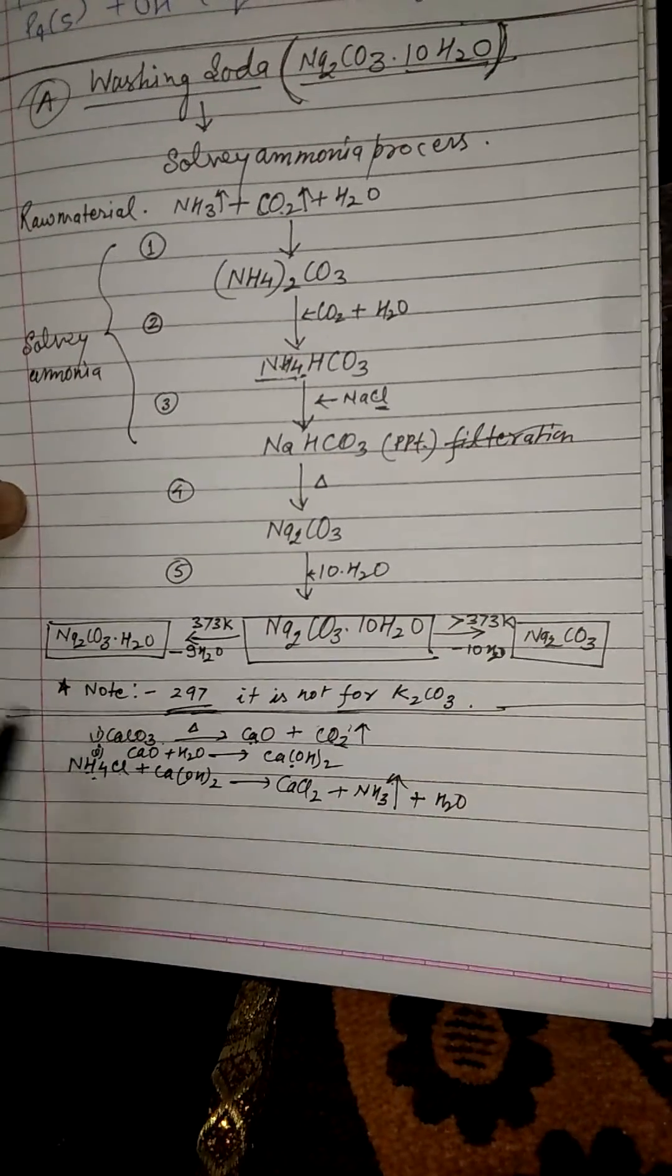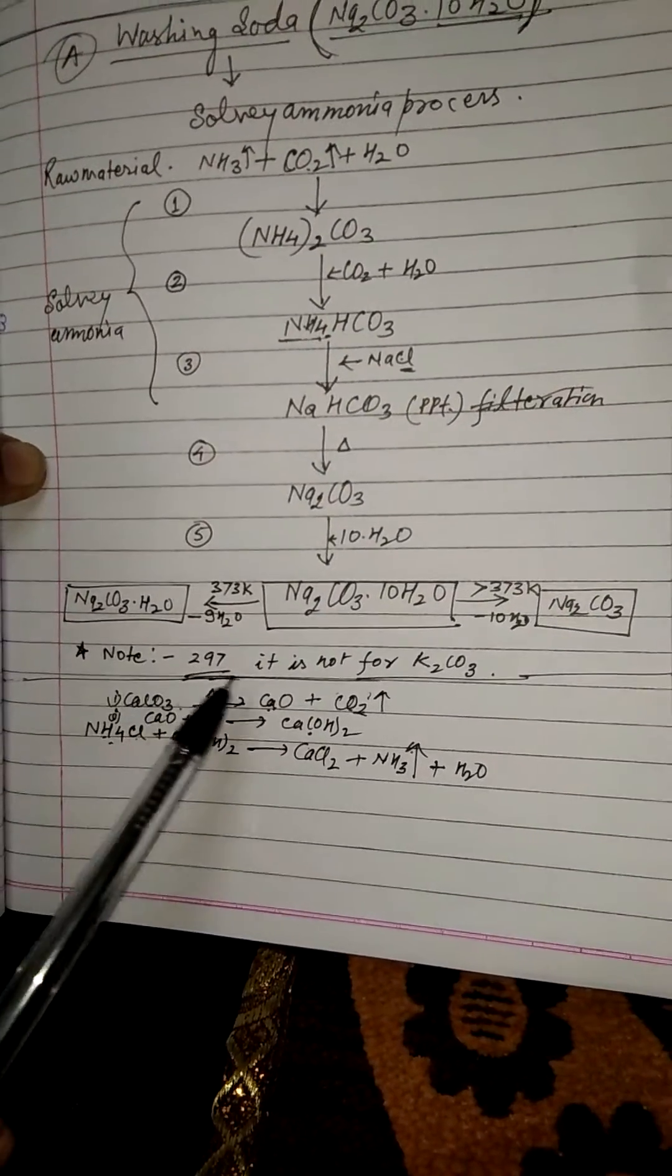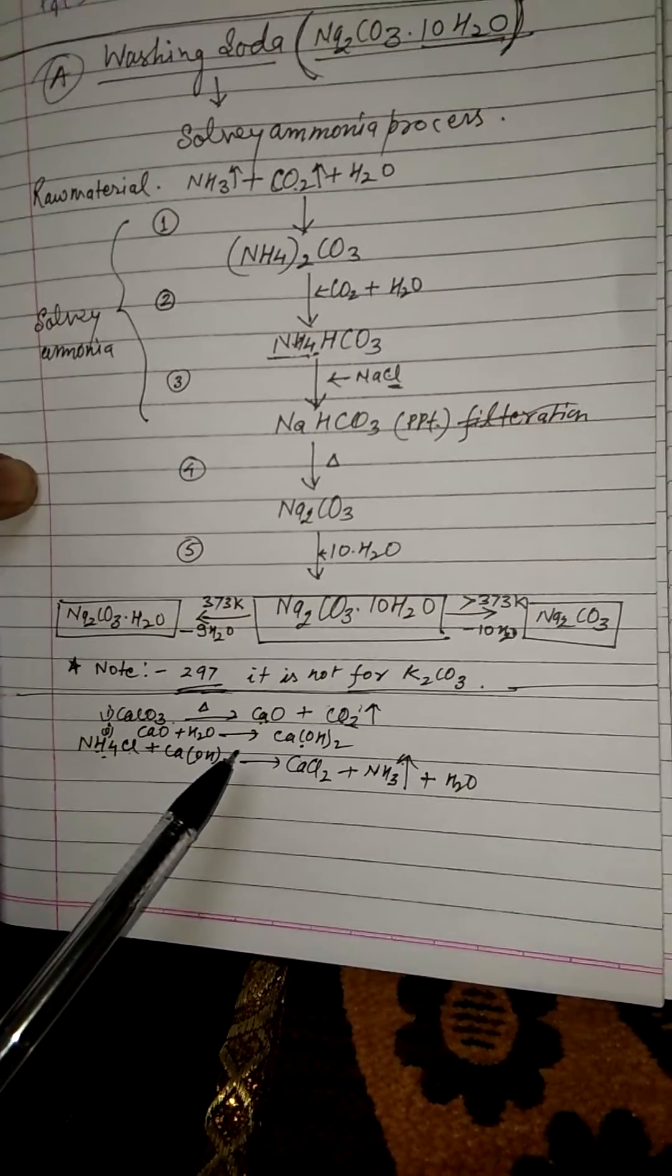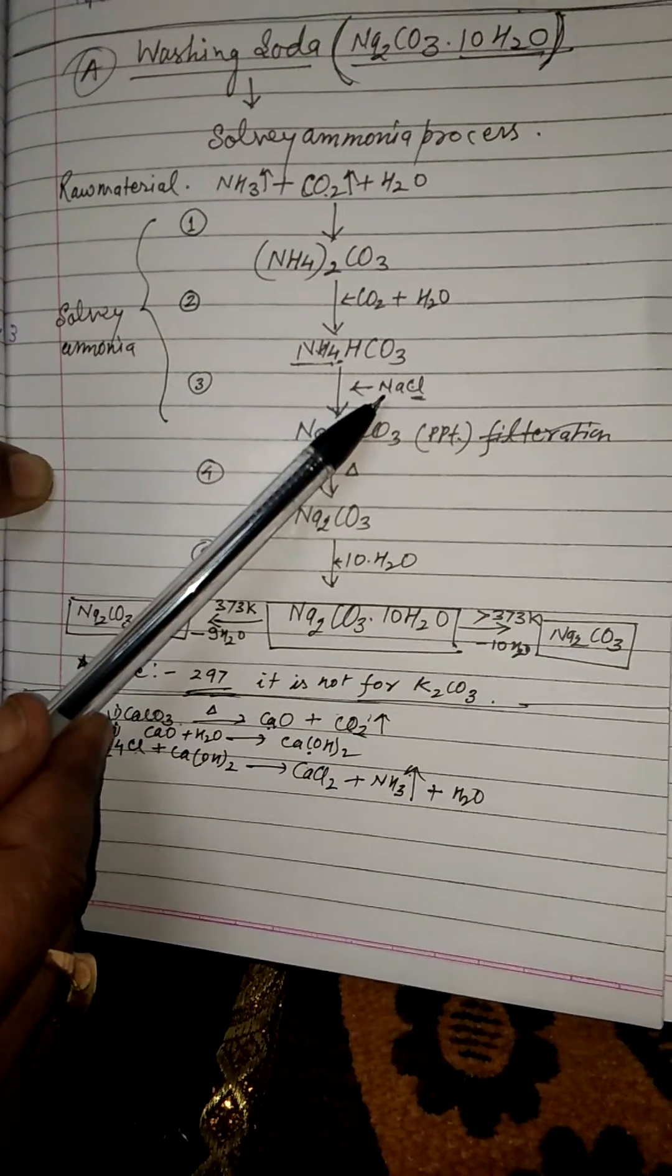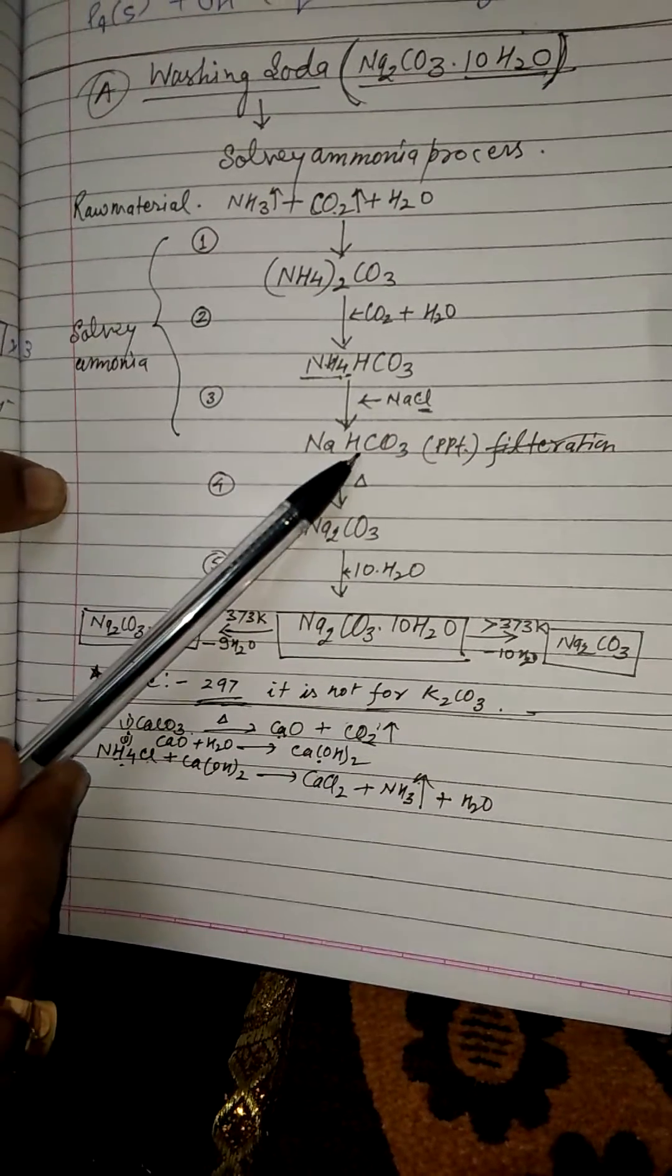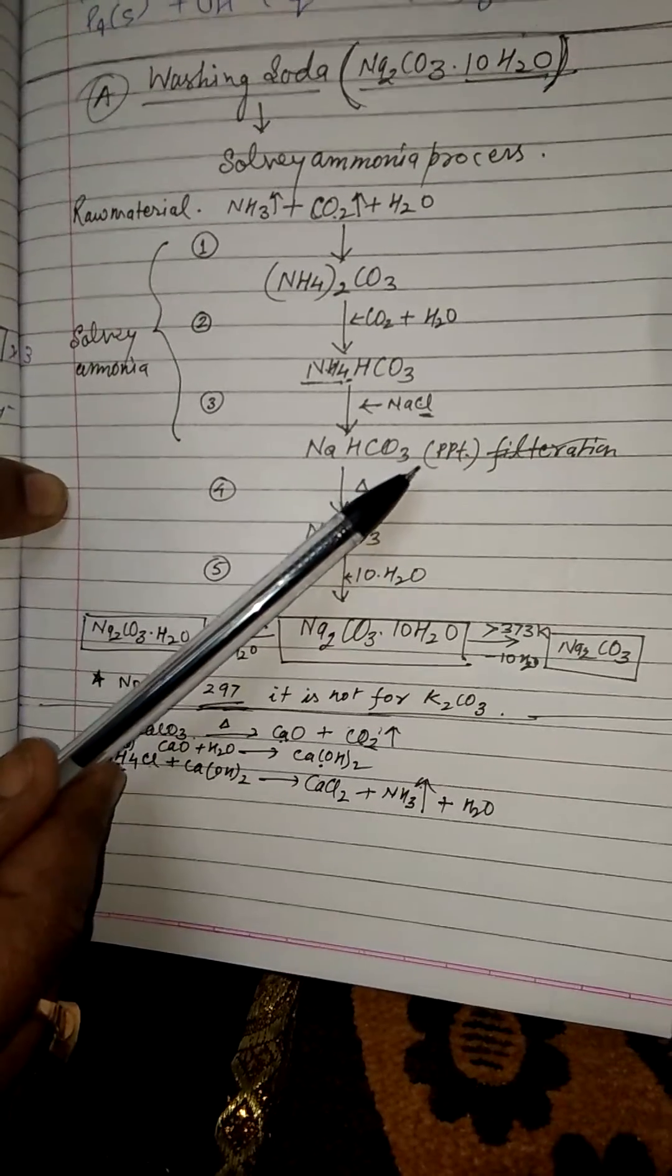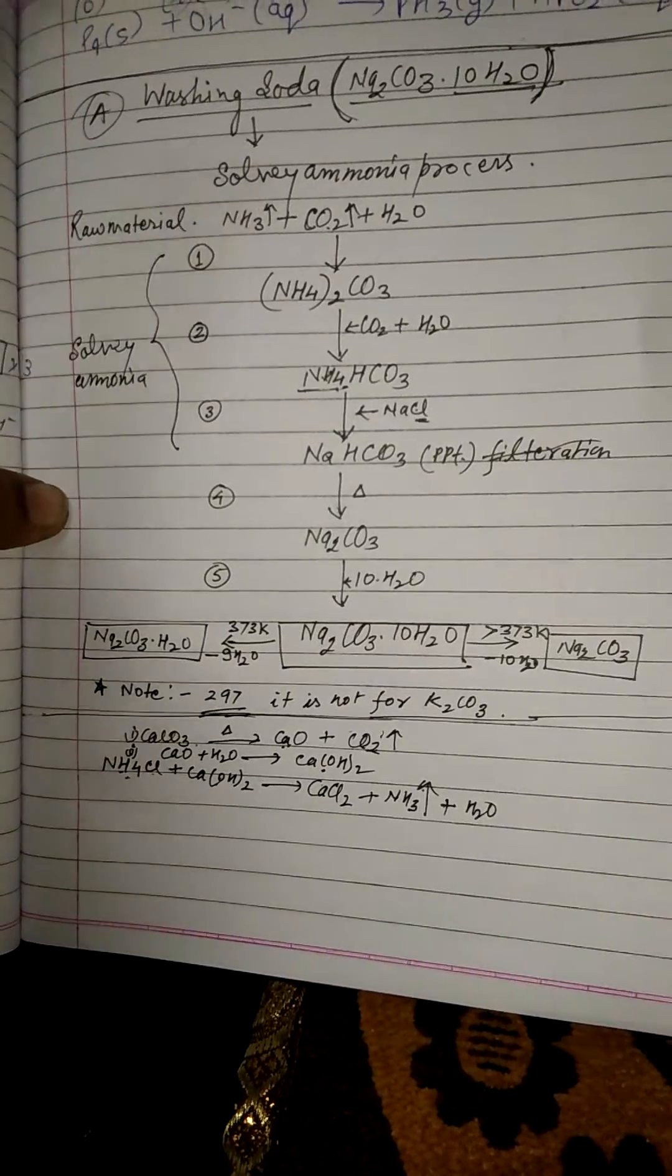One important point: we do not prepare potassium hydrogen carbonate by the Solvay ammonia process. When we add saturated solution of potassium chloride, potassium hydrogen carbonate forms, which is highly soluble in water, so we cannot separate it as a precipitate. Therefore, potassium hydrogen carbonate is not prepared by Solvay ammonia process.